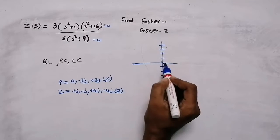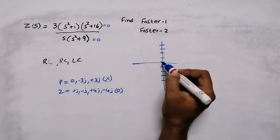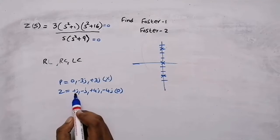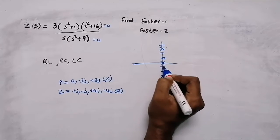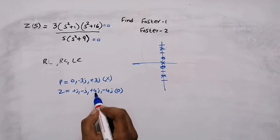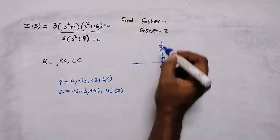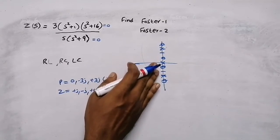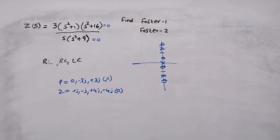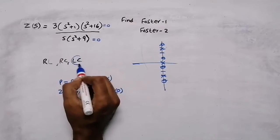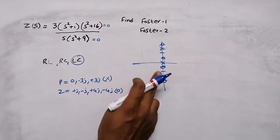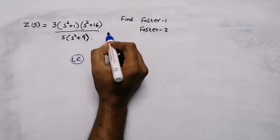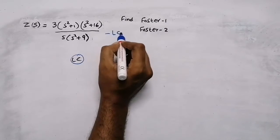Poles are at 0, plus 3j, and minus 3j. Zeros are at plus and minus j (at 1 and minus 1) and plus and minus 4j. Now, if the poles and zeros are on the imaginary axis, then that network is an LC network. Since all our poles and zeros are on the imaginary axis, the given network is an LC network.